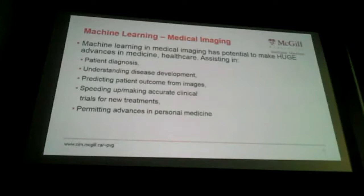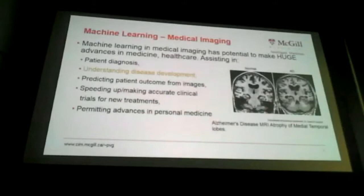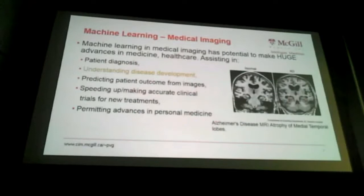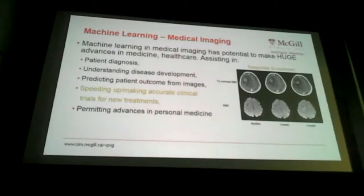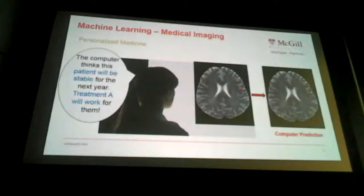Machine learning in the context of medical imaging has the potential to make huge advances in healthcare and medicine — assisting in things like patient diagnosis, understanding disease development (for example, showing how a normal person progresses to Alzheimer's), predicting patient outcome from images such as determining survival time, speeding up and making accurate clinical trials for new treatments where we can identify responders whose tumors are shrinking, and permitting advances in precision medicine where we look at an image of a patient and predict how they will respond to a particular treatment.